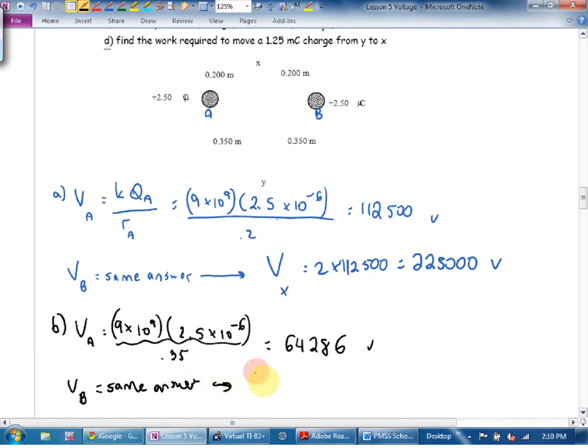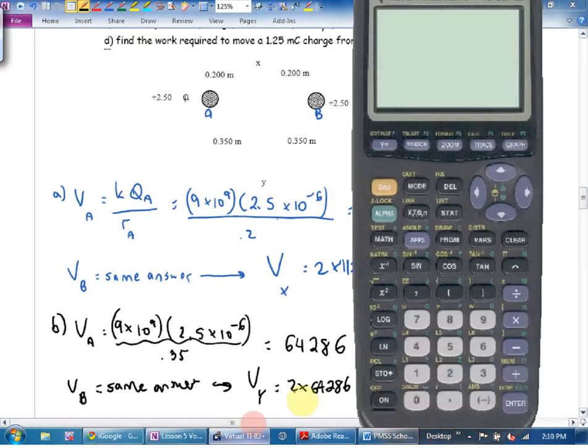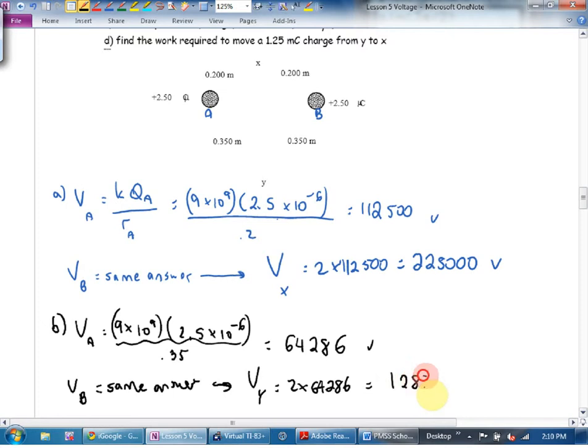The voltage at Y, then, is going to be 2 times 64,286. What do you get? I get 1.29 times 10 to the fifth volts. Did I say joules? I wrote volts.